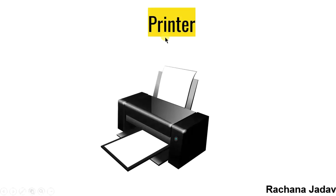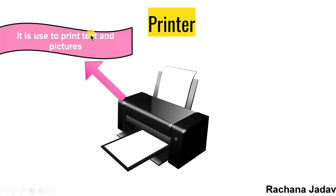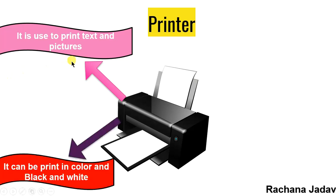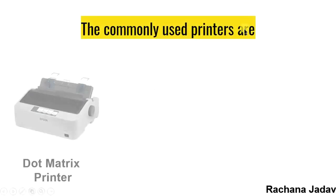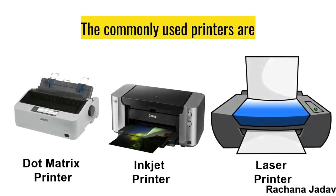Next is printer. It prints text and pictures — aap dekhna printout aap nikalte ho na worksheets ki, aapke ma'am aapko homework mein worksheets dete hain, so aap printout nikalte ho. It can print in color and black and white. It is also called the hard copy because it takes the printout on paper — paper mein woh dikhta hai. While soft copy is whatever you see on the screen, that is the monitor. The commonly used printers are dot matrix, inkjet, and laser printer — and you all mainly use laser printers.